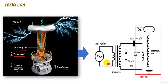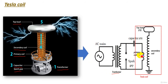The equivalent circuit of the Tesla coil consists of an AC supply, a step-up transformer, a spark gap, a capacitor connected in series with the primary coil, and a secondary coil connected in series with the top load, which acts as capacitor C2 with ground.